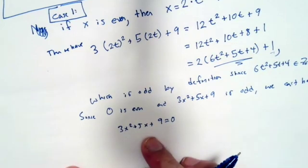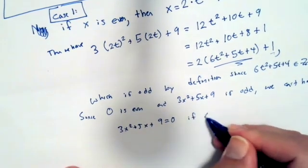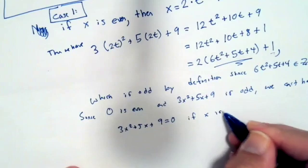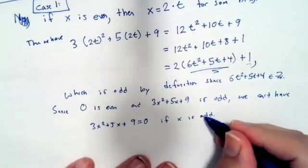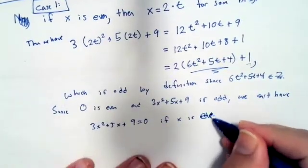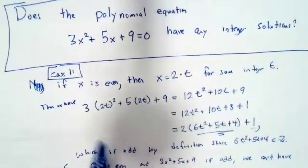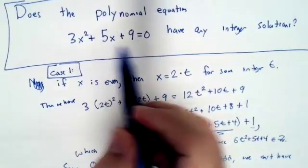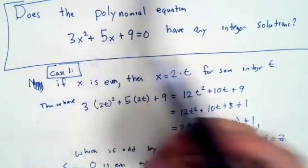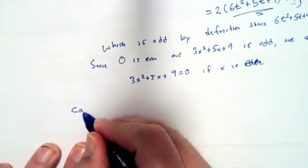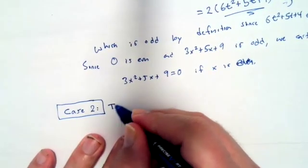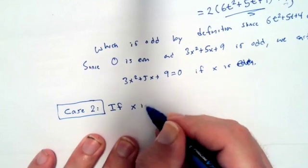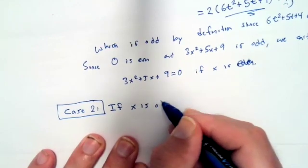This side is odd, this side is even. We've shown that if x is an even integer, then this cannot have an integer solution that's an even x. And now we can look at case 2 — we can look at the possibility that x is odd.